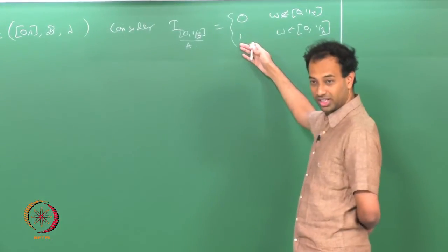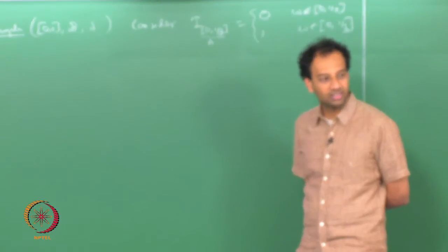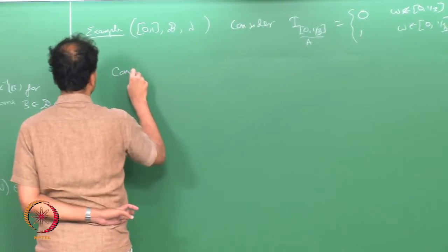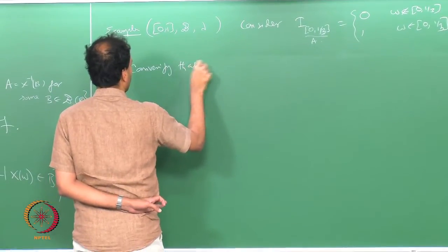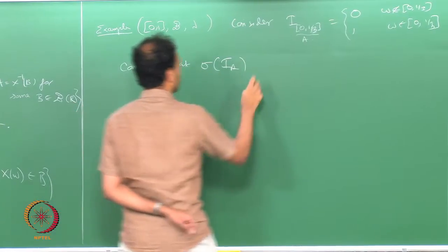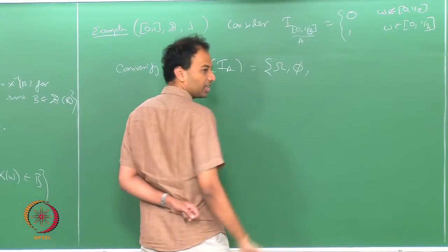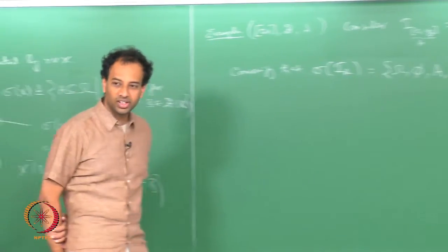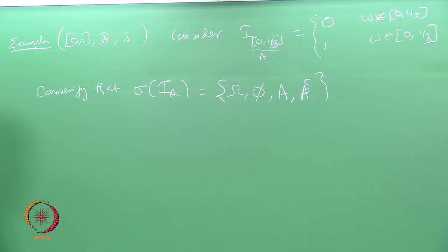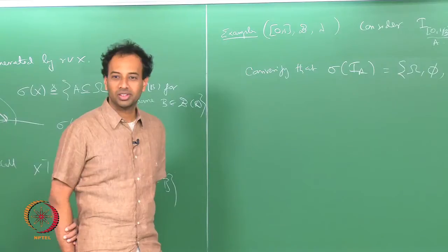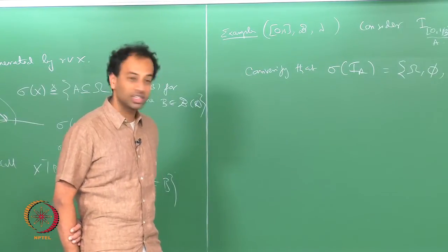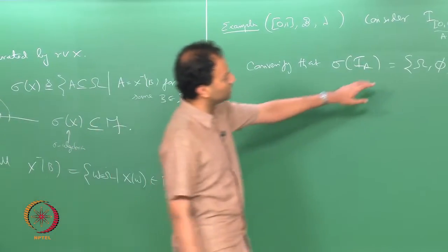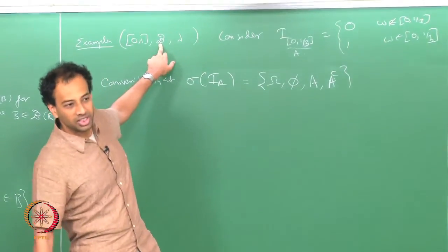For the indicator random variable I_A, you can verify that σ(I_A) equals {Ω, ∅, A, A^complement}. It only consists of these four subsets: Ω, ∅, A, and A complement. This is indeed a sigma algebra, and it is the sigma algebra generated by the indicator random variable. This is true for any Borel set A, and it is a much smaller sigma algebra than F, which is the Borel sigma algebra here.